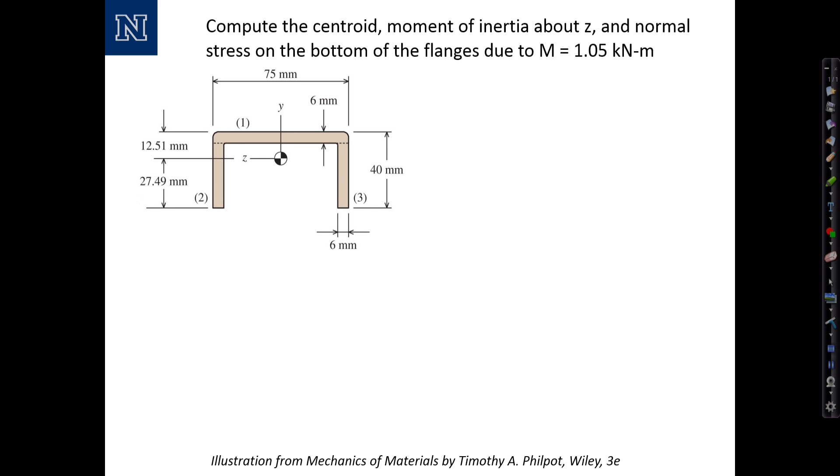The first example that we'll look at comes from an illustration from the Mechanics of Materials by Timothy Philpott, Wiley 3rd edition. It's an upside-down channel section with various dimensions indicated in millimeters. We're asked to compute the centroid, the moment of inertia about the z-axis, and the normal stress at the bottom of the flanges due to an applied moment of 1.05 kN-m in the positive direction.